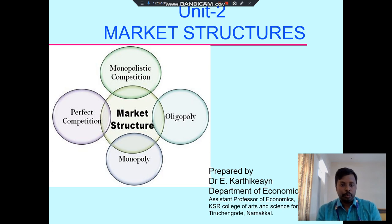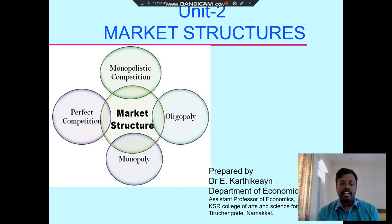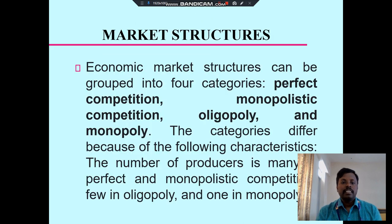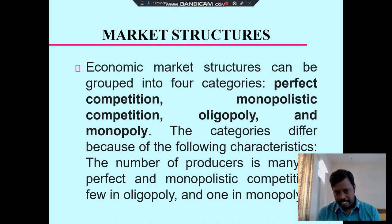This is an introduction to market structure. There are four different types of market structure: perfect competition, monopolistic competition, oligopoly, and monopoly. The economic market structure can be grouped into these four categories.